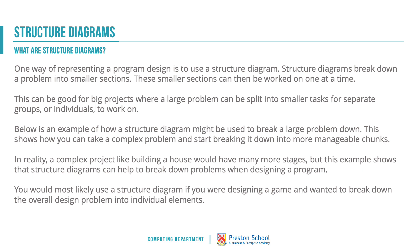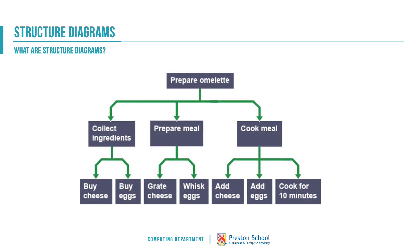Here is an example of a structure diagram showing the sort of everyday tasks that we might break down into smaller chunks. We've got a basic example of preparing an omelette: the collection of the ingredients, the preparation of the meal, and then the cooking of the meal. This example would require the first category to happen before the second and the second before the third, but that isn't always the case.